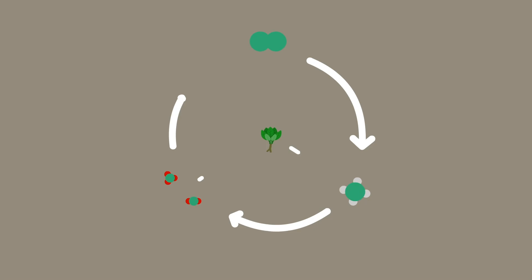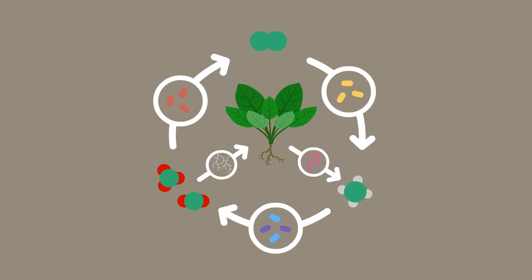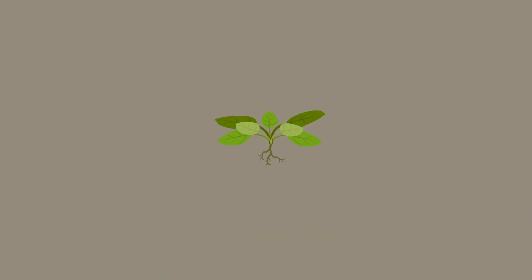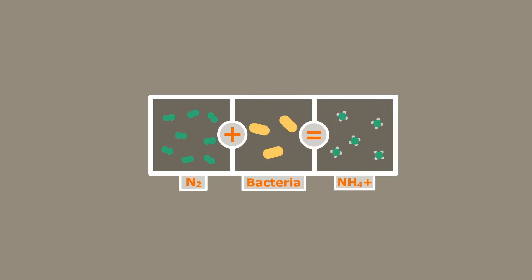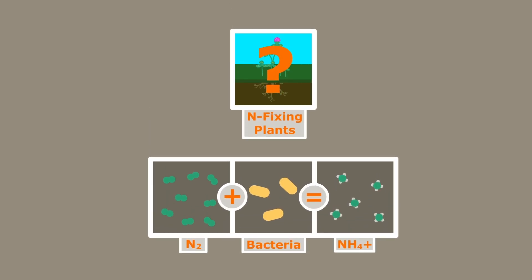Okay, so we know that the nitrogen cycle depends heavily on life in the soil. Without them, the plants would be quite sad. But you may have noticed, if the fixation process is done by bacteria, where do nitrogen-fixing plants fit into this?